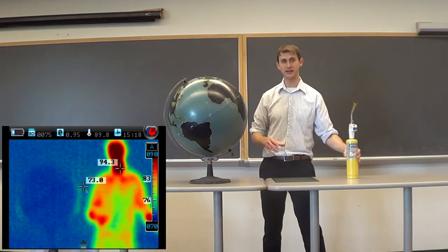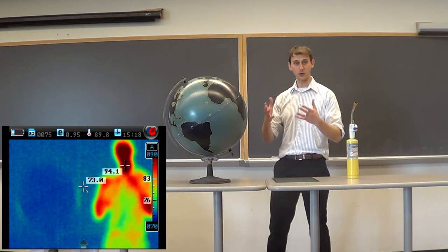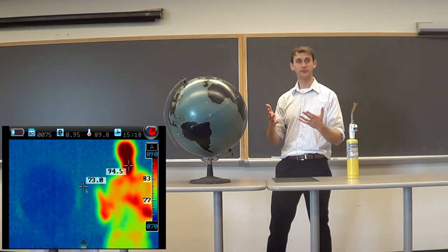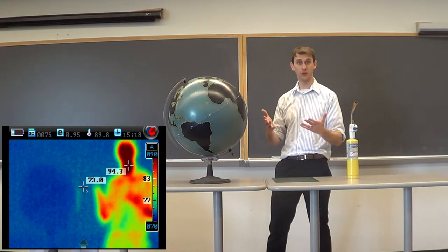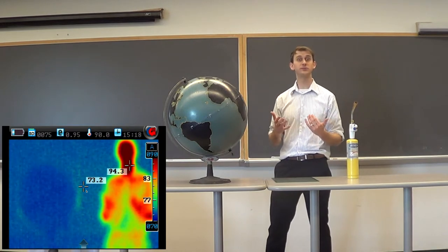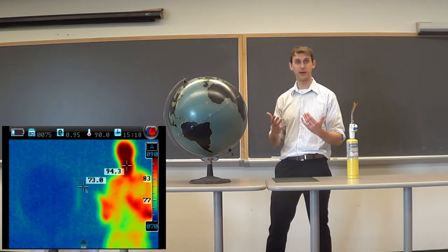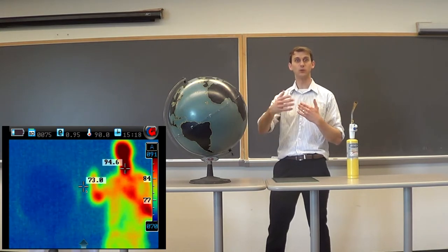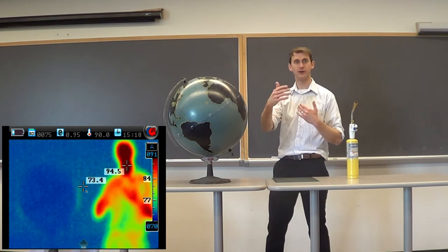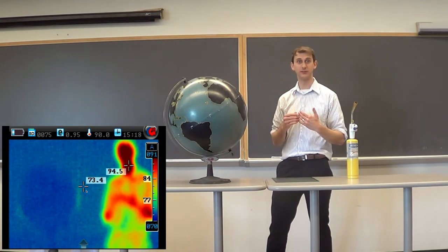Now everybody's familiar with the idea that the Earth is warmed up by the sun. Sunlight warms the Earth. And anybody who's sat around a campfire is also familiar with the idea that when you're close to the campfire, you feel heat radiating off of that campfire. That's invisible light.